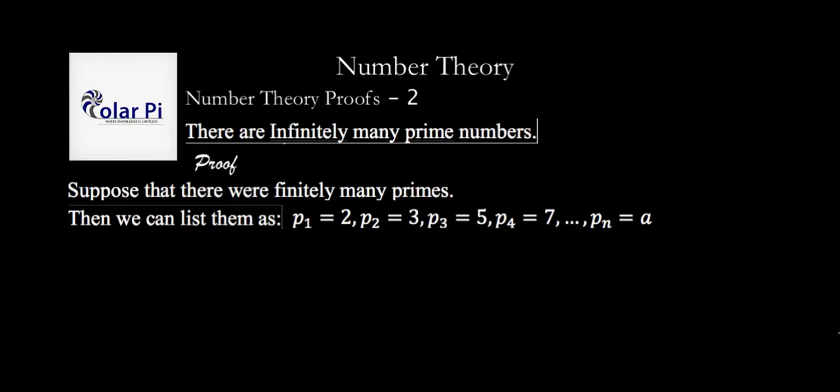we continue in this manner, and somewhere down the line, we will be able to write the last of them, PN, and let's call it A. But the primes are finite in our assumption, so the list must end somewhere. Okay, it's ended here. Now,